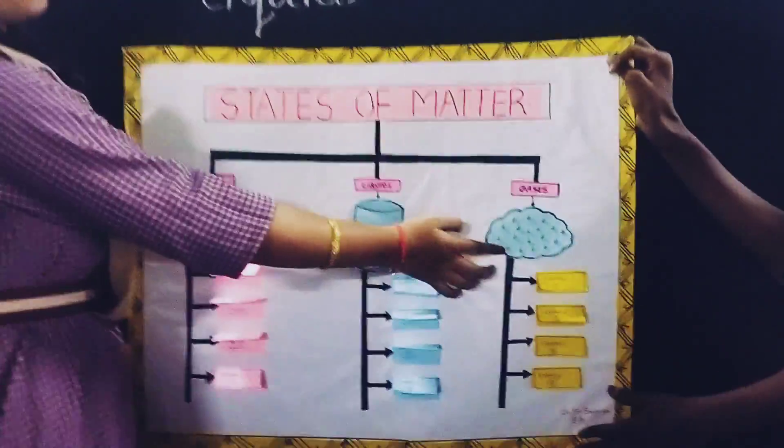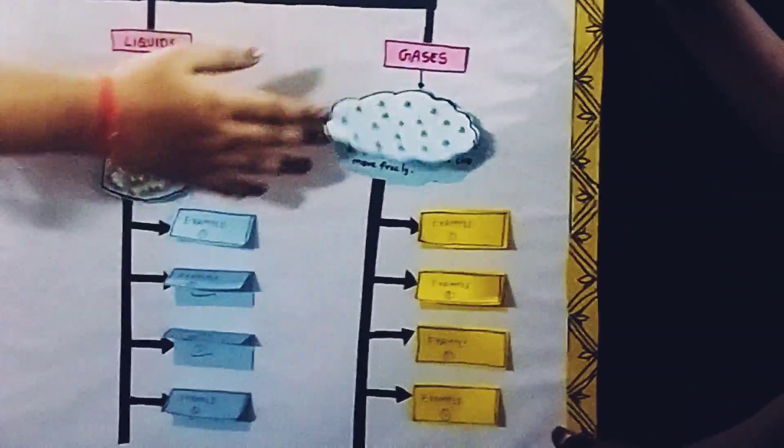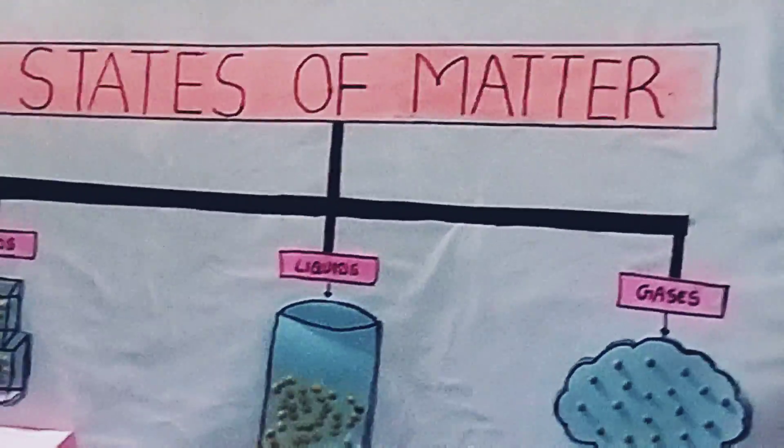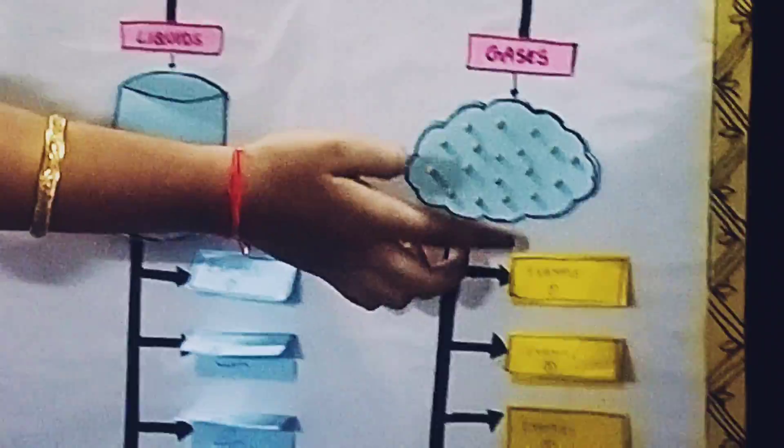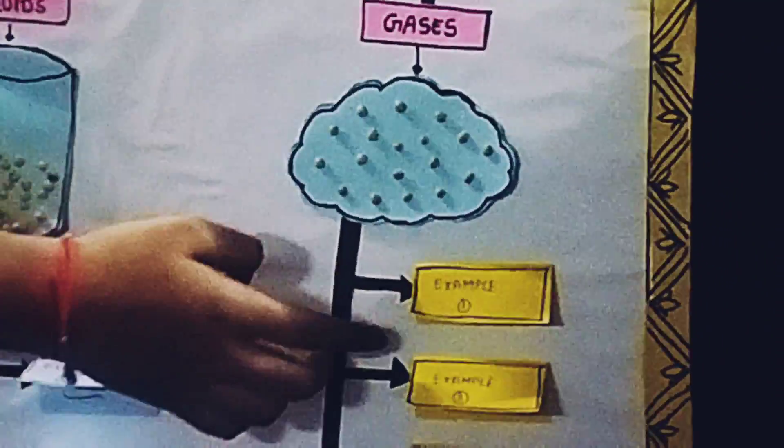Gases can get their shape by depending upon their container. Gases have no fixed volume, and molecular arrangement in gases is very far from each other.